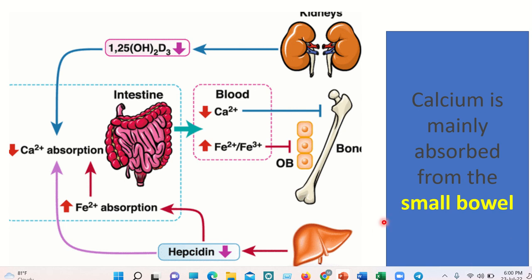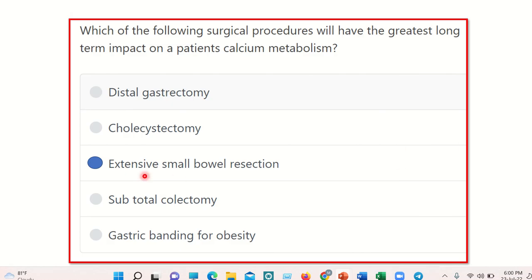Therefore, resection of a large part of the small bowel is responsible for the long-term effect on calcium metabolism. Our final answer is extensive small bowel resection. The other options are not responsible for calcium metabolism. Thank you.